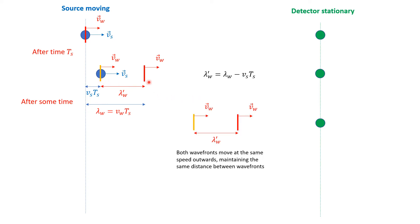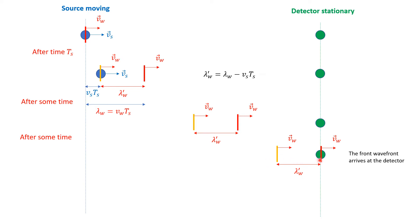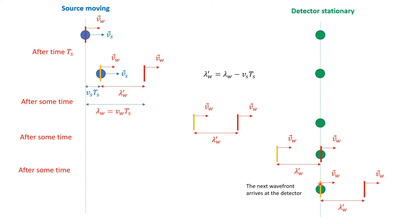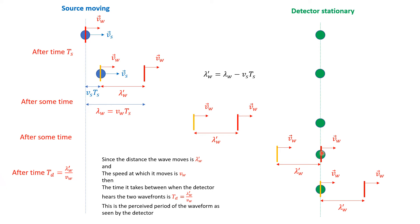Once the two wavefronts are emitted, they always move out with the same speed v_w, so they maintain the distance between them as λ'. When the first wavefront arrives at the detector, and then after some time the second wavefront arrives, the time between them is the period of the detector T_d. The second wavefront traveled a distance λ' at speed v_w, so T_d = λ' / v_w.